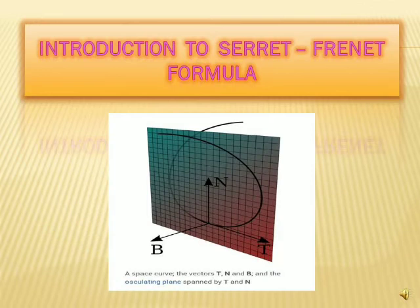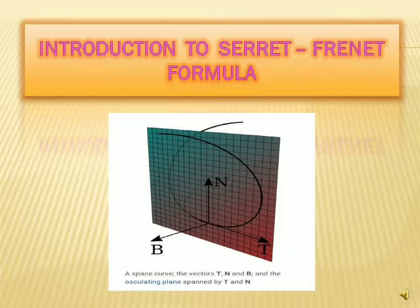Introduction to the Serret-Frenet formula. We have a space curve with vectors t, n, and b, and the osculating plane spanned by t and n, where n is the normal, t is the tangent, and b is the binormal, where b is equal to t cross n.